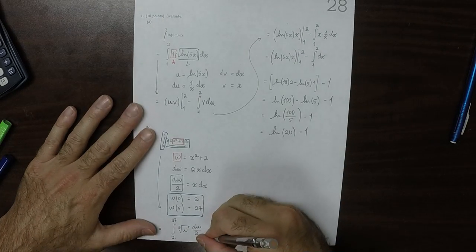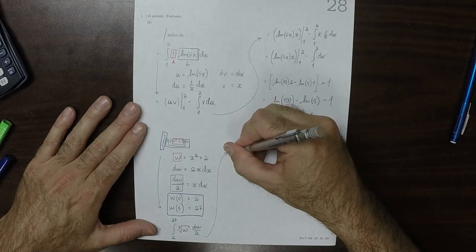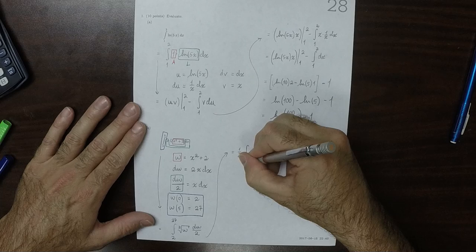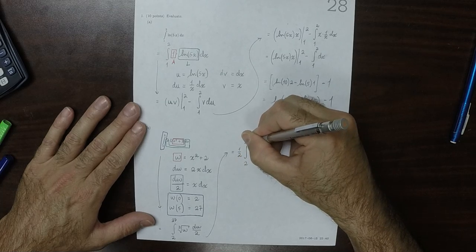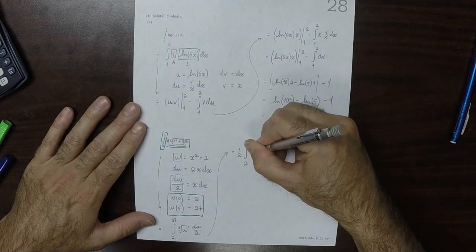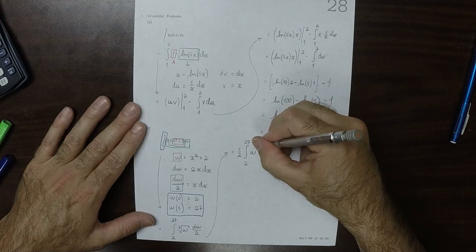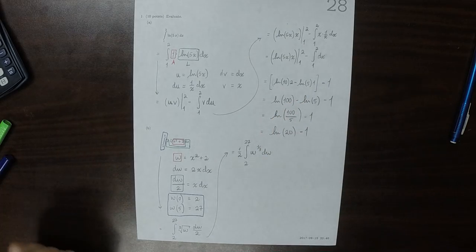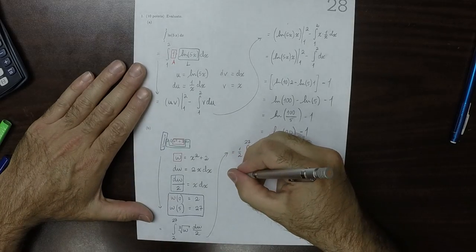Okay, well, that half can come out, so that it's half integral from 2 to 27. And then I'll express that cube root as fractional exponent 1 third. And then now we can use the power rule.